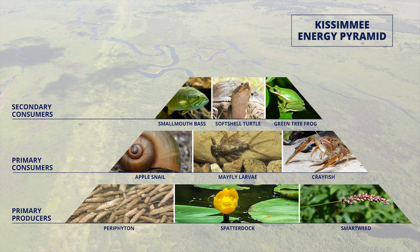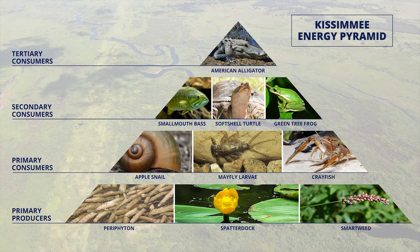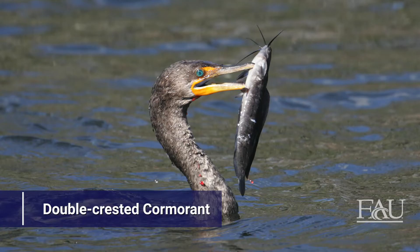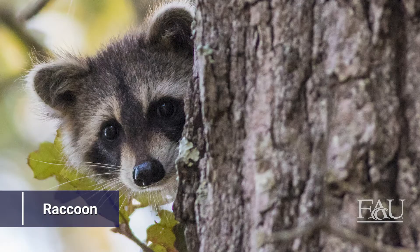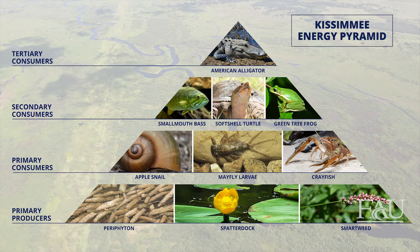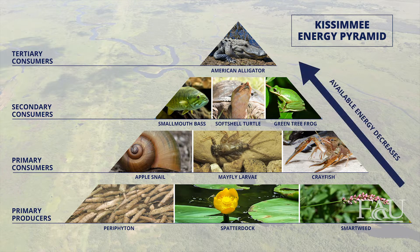Secondary consumers, such as large fish, turtles, and frogs, eat the primary consumers. Finally, secondary consumers are eaten by tertiary consumers, which are at the top of the food web, such as wading birds, raccoons, and alligators. Each level within the food web is called a trophic level. The flow of energy decreases as it moves up through each level.